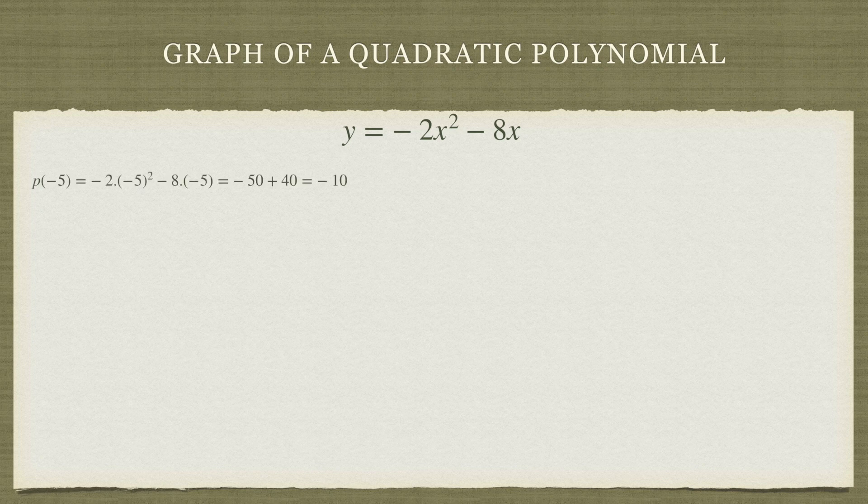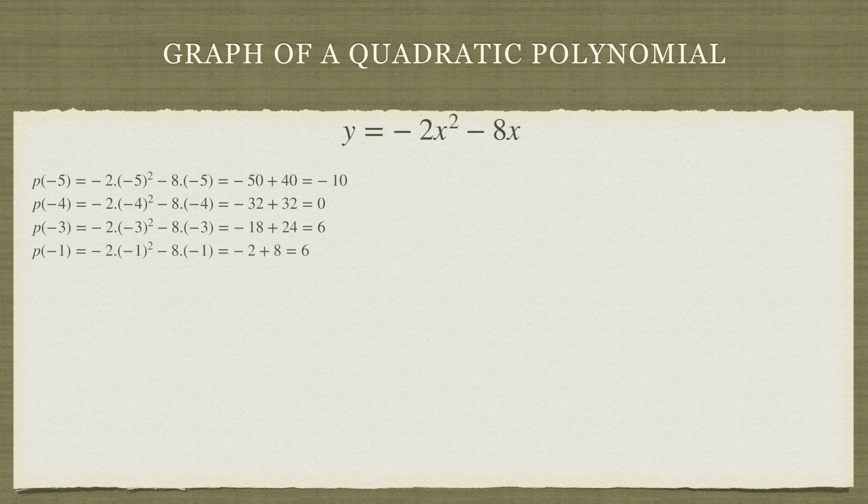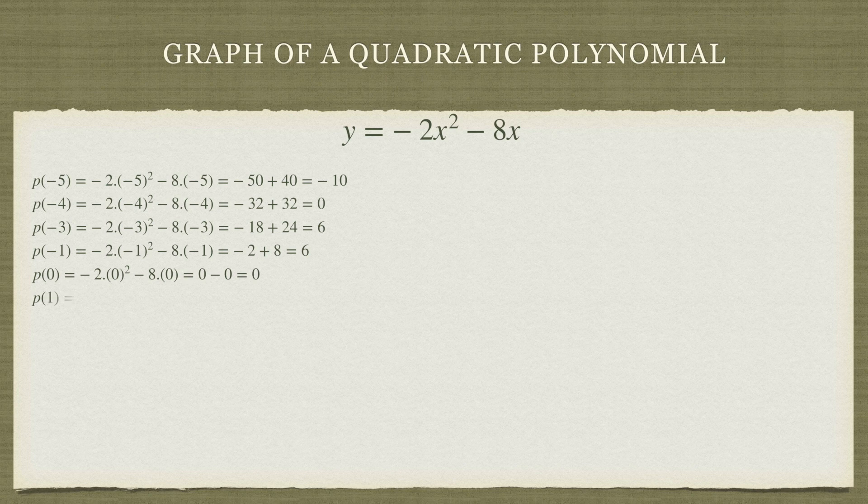For x equals minus 5, the value of the polynomial is minus 10. For x equals minus 4, the value is 0. For x equals minus 3, the value is 6. For x equals minus 1, the value of the polynomial is 6. For x equals 0, the value is 0. For x equals 1, the value is minus 10.